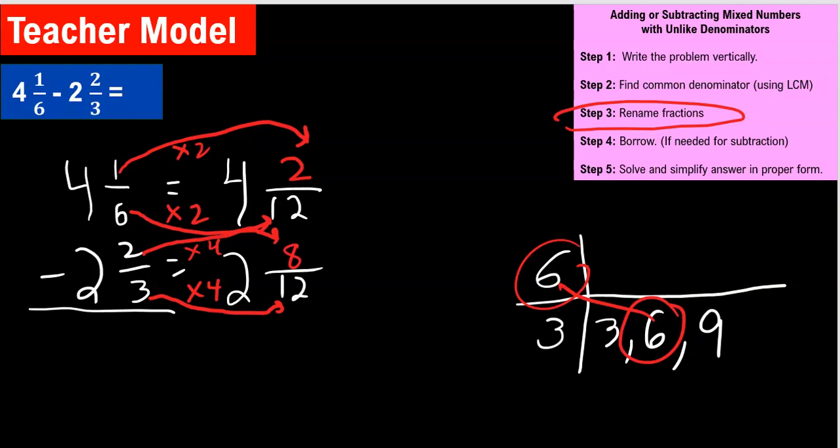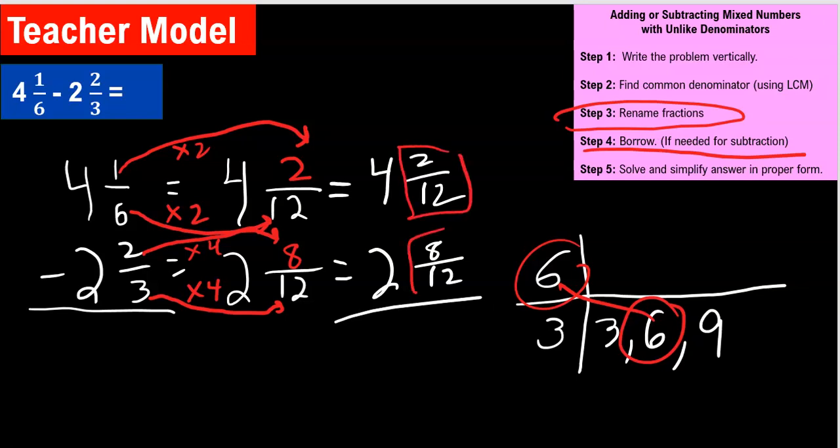Next step, borrow if needed. That's different. Let's see what that looks like. I'm going to rewrite this over here just so we can see it nice and clean. Four and two twelfths minus two and eight twelfths. Now, how do we know if we need to borrow? If you start with the fraction, let's take two twelfths subtract eight twelfths. Oh, we can't do that.